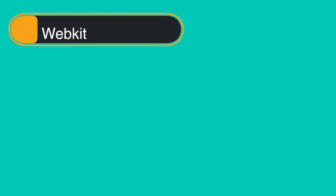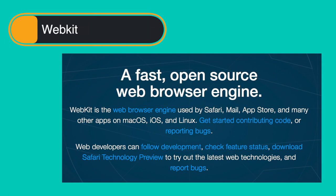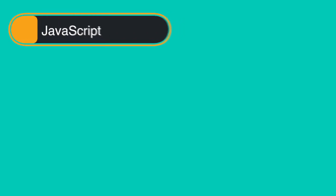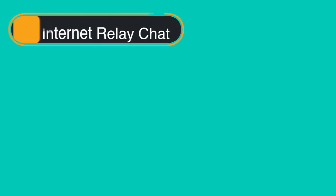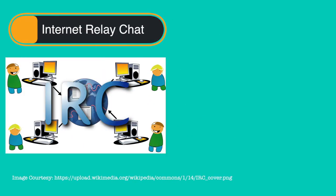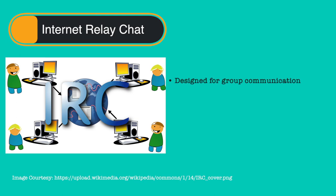Let me give a few definitions for terms I mentioned. WebKit is a layout engine designed to allow web browsers to render web pages, similar to Gecko. JavaScript is a prototype-based object-oriented scripting language that is dynamic and has first-class functions. IRC, or internet relay chat, is a form of real-time internet text messaging or synchronous conferencing, designed for group communication in discussion forums called channels, but also allows one-to-one communication via private messages as well as data transfer including file sharing.